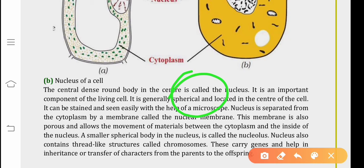Nucleus is separated from the cytoplasm by a membrane called the nuclear membrane. This membrane also helps in the transmission of materials inside the nucleus. Inside the nucleus, there is one more spherical body. It is known as nucleolus. Nucleus also contains thread-like structures called chromosomes. Chromosomes contain the genes.